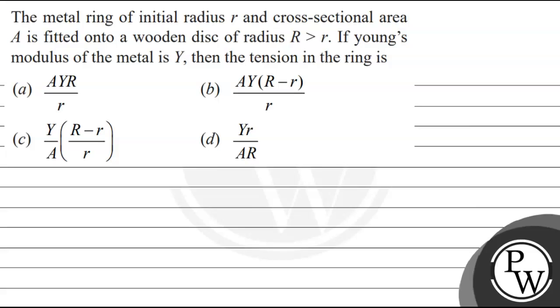Let us read this question. The question says that the metal ring of initial radius r and cross sectional area A is fitted onto a wooden disc of radius R which is greater than r.